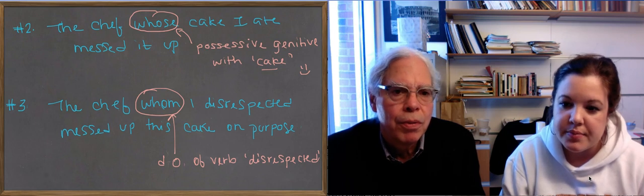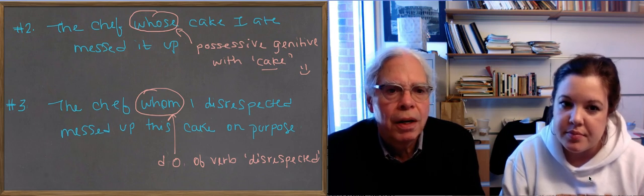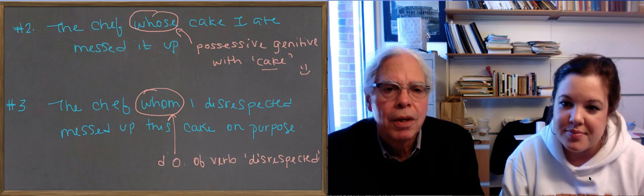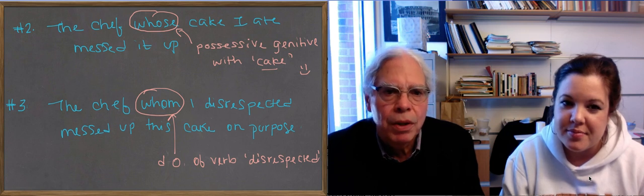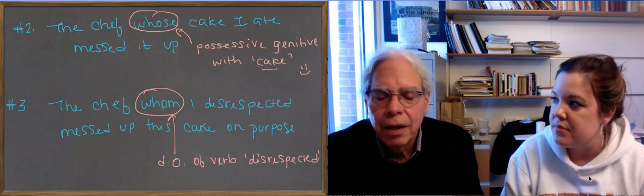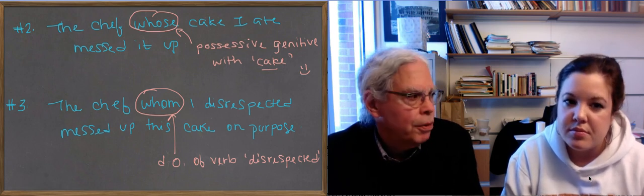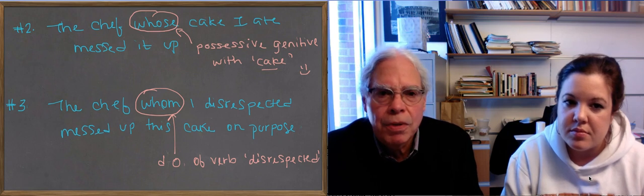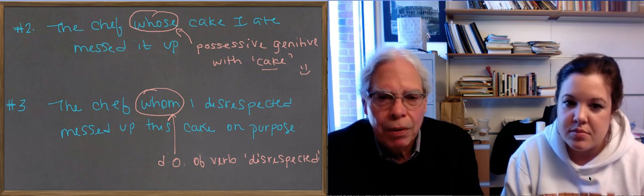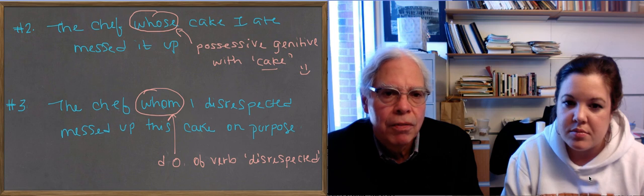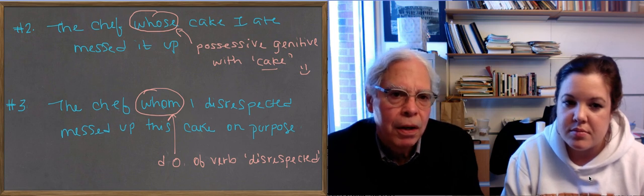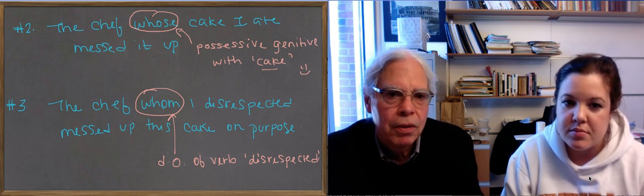So here's number two. The chef whose cake I ate messed it up. Now whose is spelled in a funny way, but it's really who apostrophe s. It's the genitive of who. So we have remains of the inflectional system in Indo-European in relative pronouns in English. So that's why we want to look at them. But there, that's a genitive, and it's a genitive modifying cake.